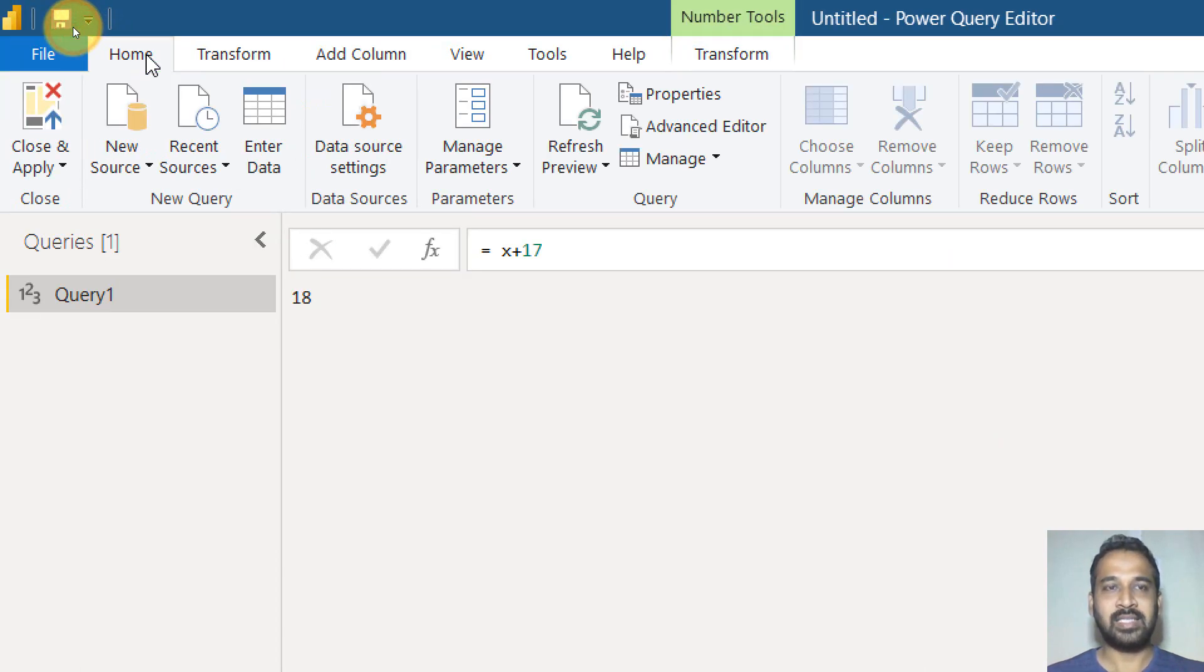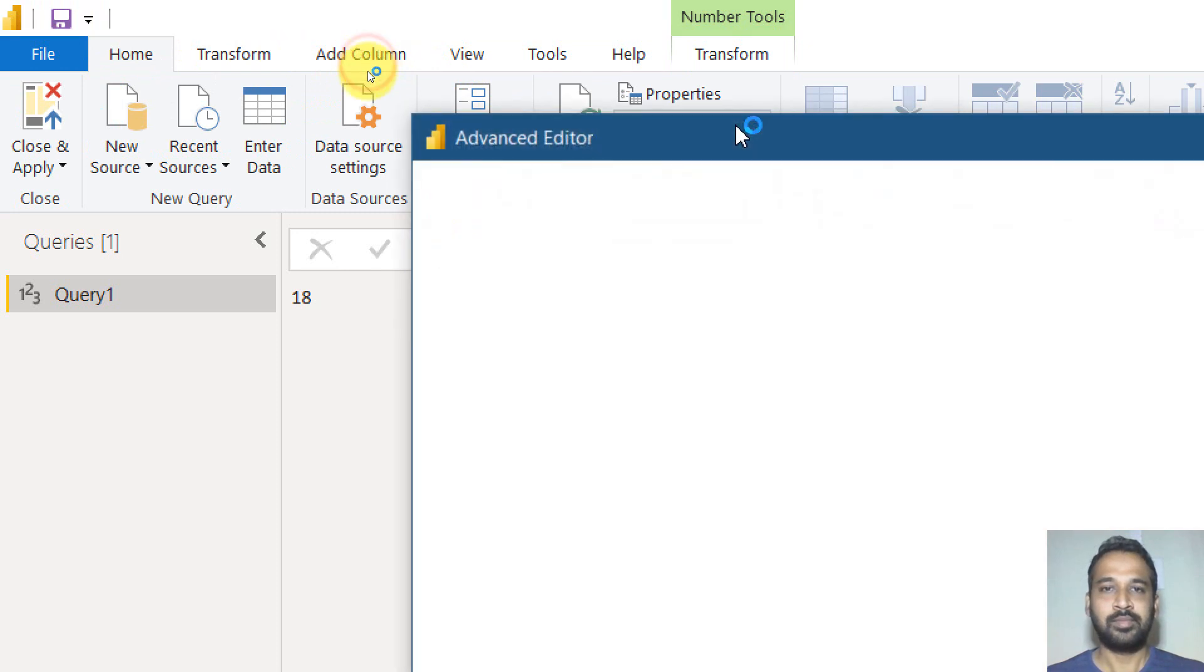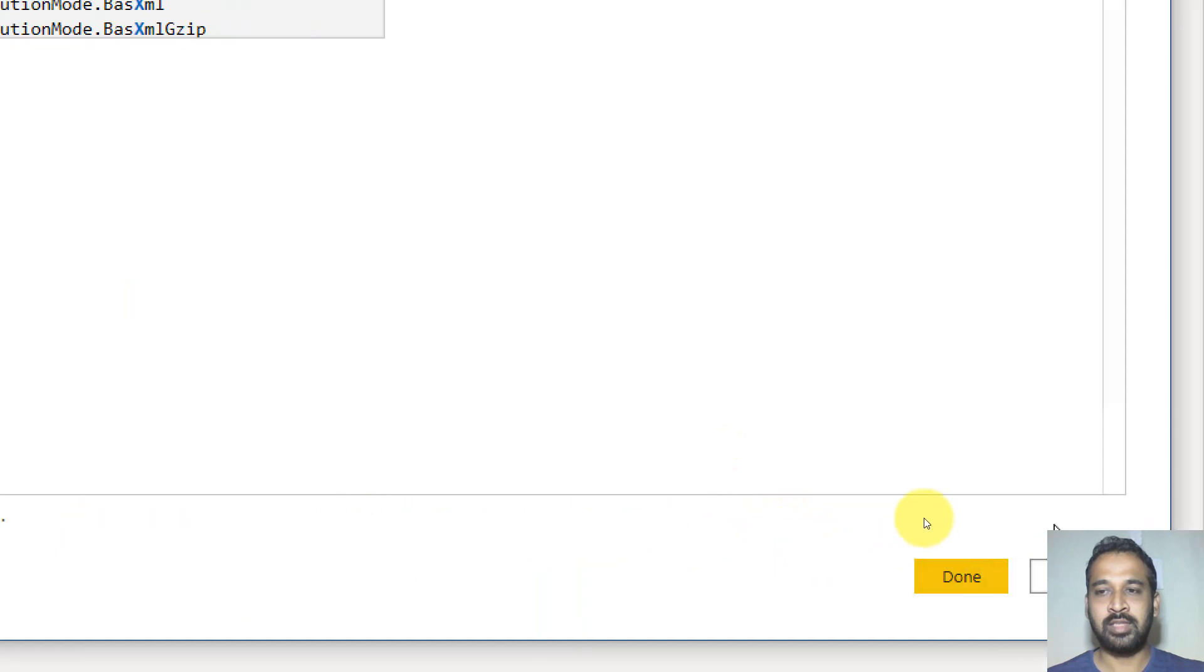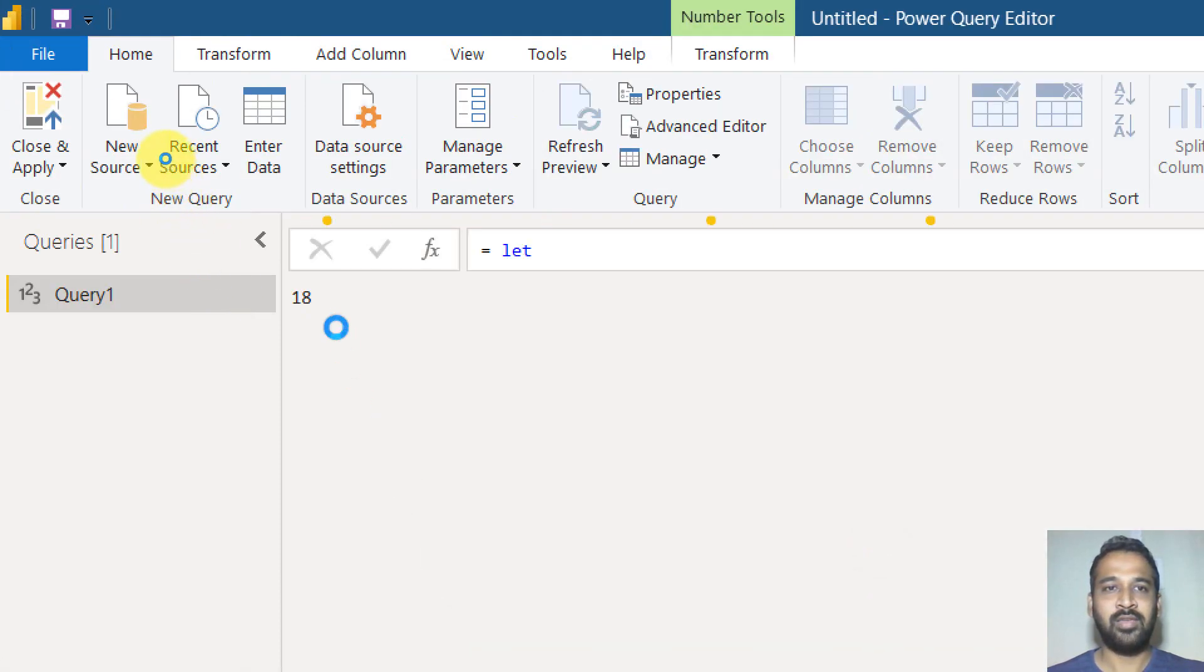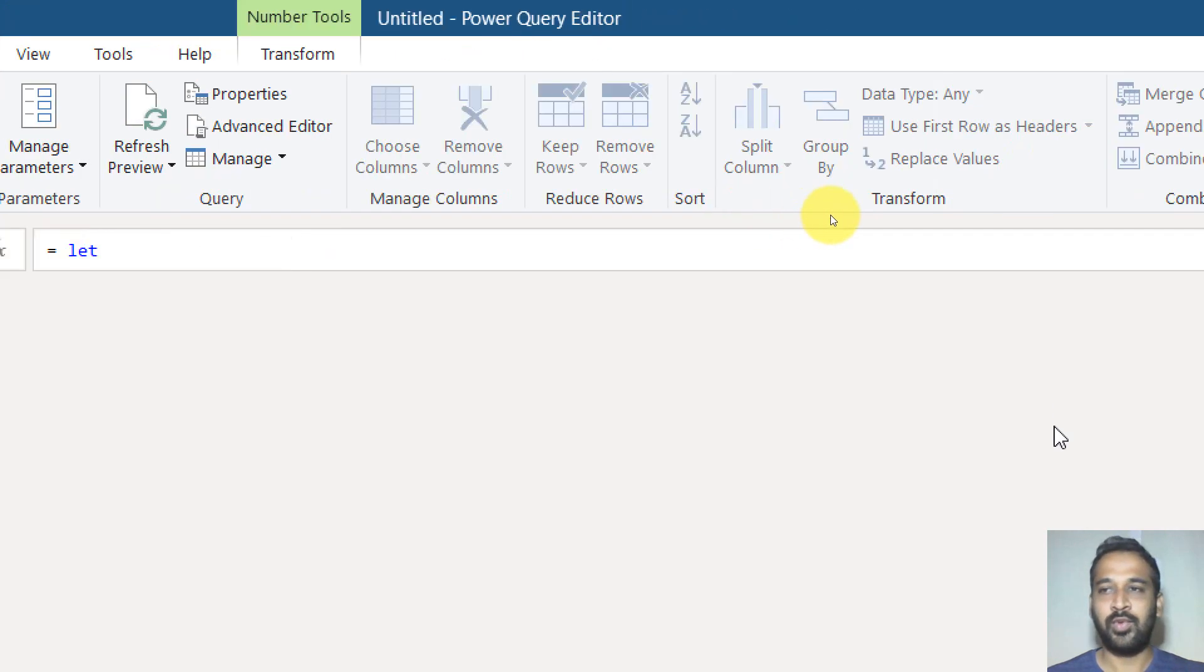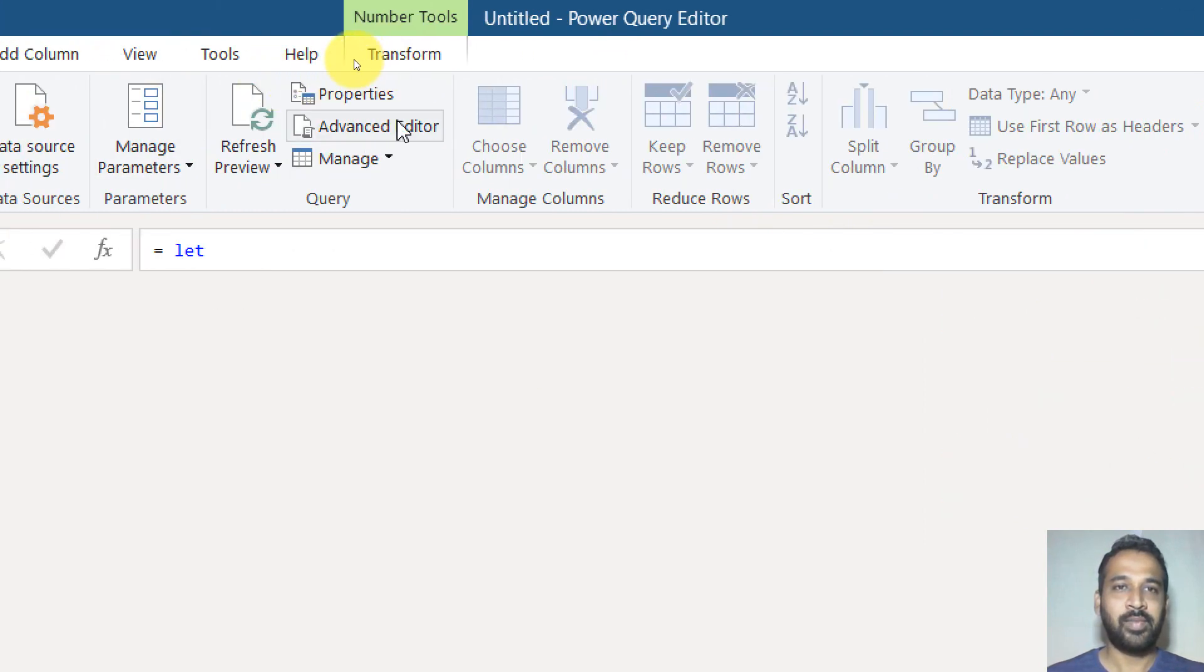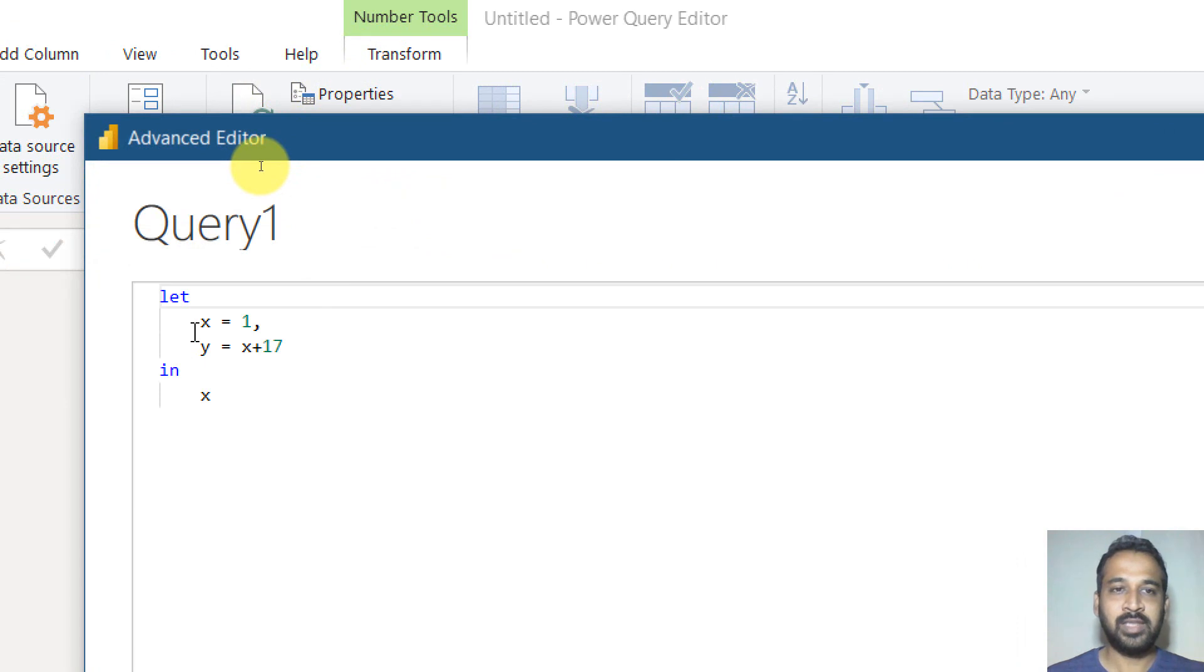And also on the right side, you can see this step is being shown here that X and Y. Now, just to make you clear, understand if I go again to advanced editor here in the in, basically the output statement instead of Y, if I pass X here and then click on done, what you can see the value here is one. And if you look at the right side, it's just query. There is no X and Y here.